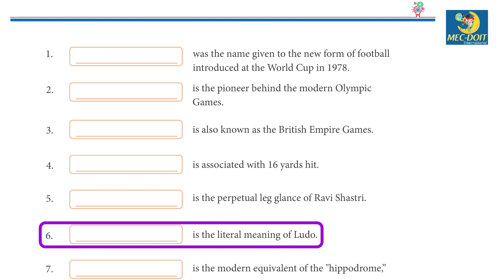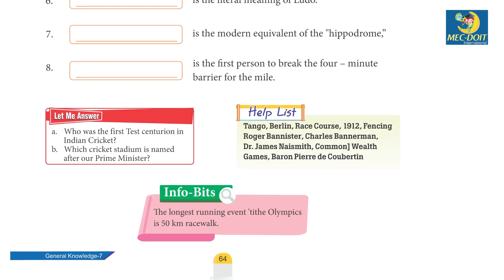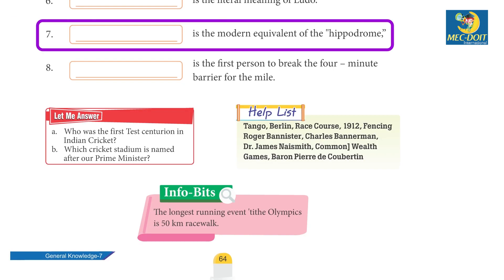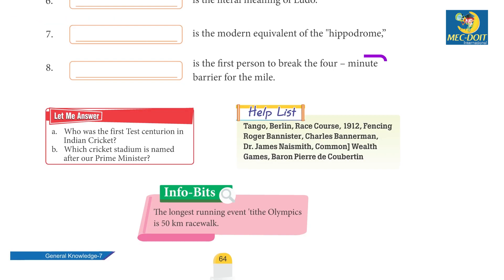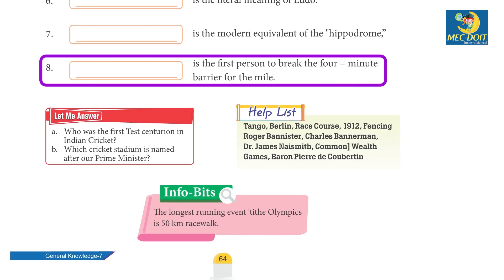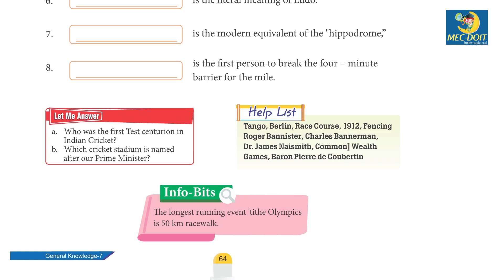6. ___ is the literal meaning of Ludo. 7. ___ is the modern equivalent of the hippodrome. 8. ___ is the first person to break the four-minute barrier for the mile.